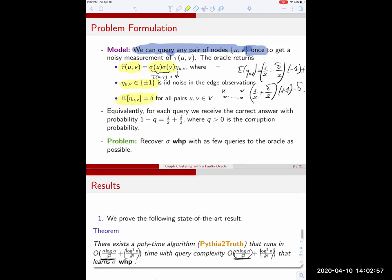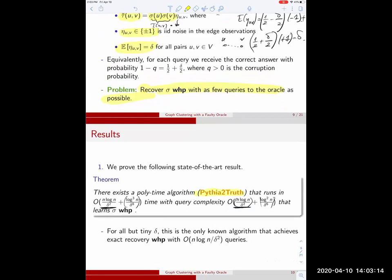The goal is to recover sigma with as few queries as possible and have an algorithm which is efficient. The runtime ideally should be polynomial or even better linear in the number of queries. What we show in this paper is an algorithm called Pythia2Truth. Pythia was an oracle in ancient Greece giving ambiguous answers which runs in n log n over delta square time plus log cubed n over delta to the eighth. Unless delta is extremely tiny this is the dominating term. The query complexity is n log n over delta square plus log square n divided by delta to the sixth. Except for tiny delta, this is optimal query complexity.